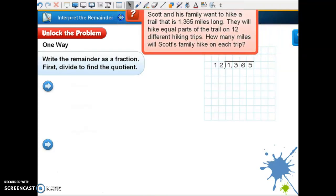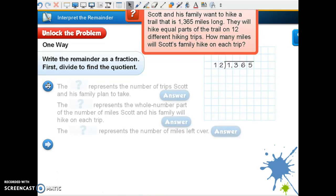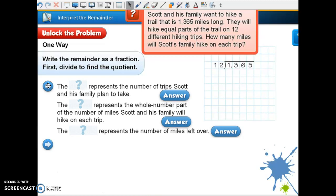So here's our question today. Scott and his family want to hike a trail that is 1,365 miles long. They will hike equal parts of a trail on 12 different hiking trips. How many miles will Scott's family hike on each trip? So the first question they ask is the blank represents the number of trips Scott and his family will take.